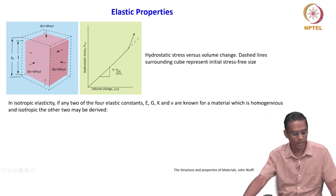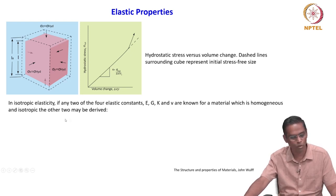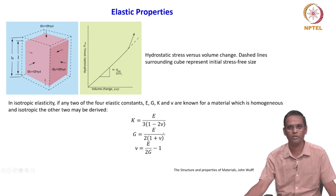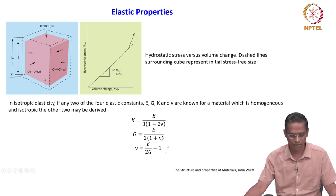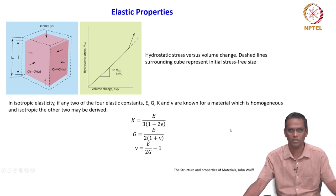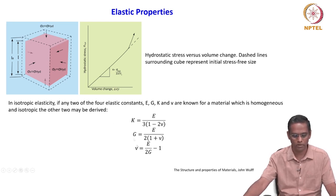Coming back to isotropic elasticity: if any two of the four elastic constants — E, G, K, and nu — are known for a material which is homogeneous and isotropic, the other two may be derived. We have already seen some of these relations. We will be using this relationship in fracture problems or any failure analysis problems — it is quite useful.